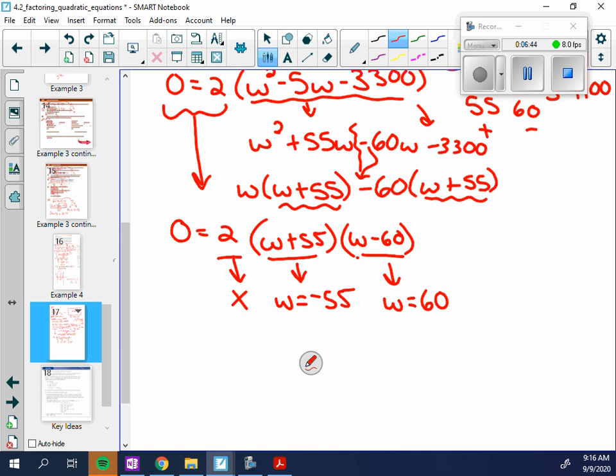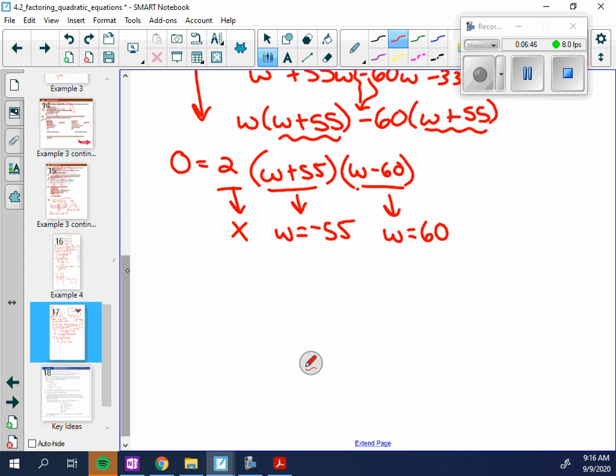Now, I want you to be careful. Lots of students would say, well, that means that my width is 60, and my length is 55. And that's going to end up being true, but not because of the 55 here. This is considered an extraneous root, because w was my width. And my width cannot be negative. Width, lengths, those are going to be positive items. So the only thing we know is that the width is equal to 60.